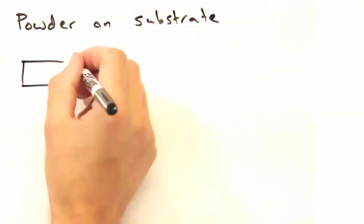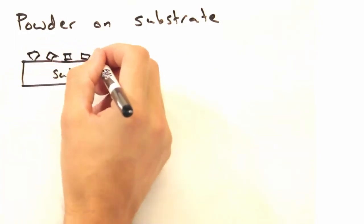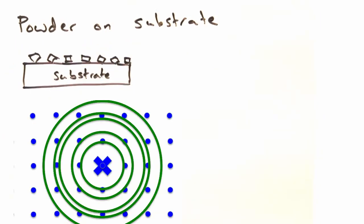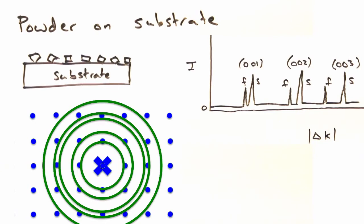On the other hand, if we have a completely disordered system like a powder on our substrate, our reciprocal space for the film would be made of concentric spheres and the intensity spectrum would have extra peaks.